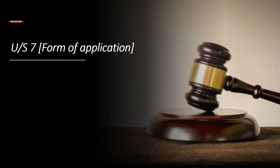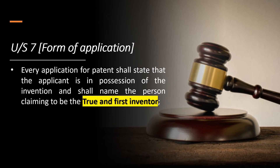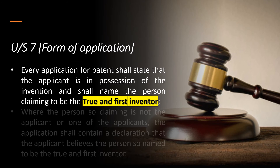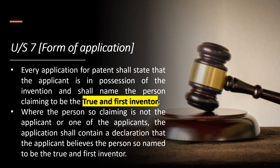Section 7, form of application, states that every application for a patent shall state that the applicant is in possession of the invention and shall name the person claiming to be the true and first inventor. Where the person so claiming is not the applicant or one of the applicants, the application shall contain a declaration that the applicant believes the person so named to be the true and first inventor.